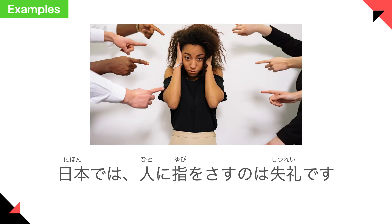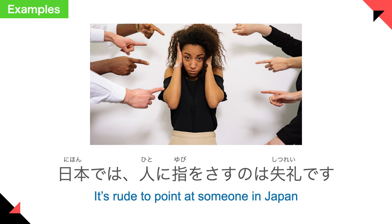Next example sentence: 日本では人に指をさすのは失礼です。 It's rude to point at someone in Japan. It might be rude in many countries as well. 人に指をさす means to point at someone; 失礼 means rude.